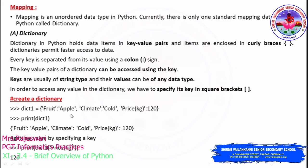In a key-value pair, each key is separated from its value using a colon sign. For example, 'climate' and 'cold' are separated by a colon, and 'price_kg' and 120 are separated by a colon. This entire key-value pair is considered one item. You access a dictionary's values using the key — 'price_kg', 'climate', and 'fruit' are all keys.